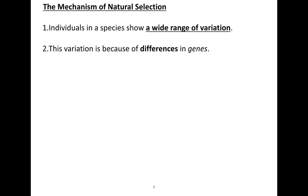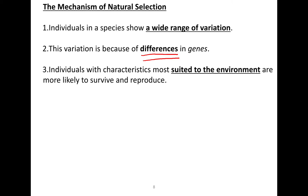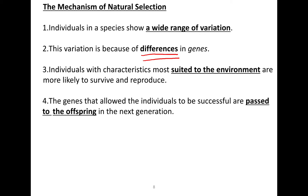Natural selection works as follows. An individual species will show a wide range of variation — for example, our finches have many different types of beaks. This variation is due to differences in their genes; these birds will have different beaks genetically inherited from their parents. The individuals with characteristics most suited to the environment are more likely to survive and therefore reproduce, giving them some sort of competitive advantage. The genes that allowed the individuals to be successful are passed on to the next generation.